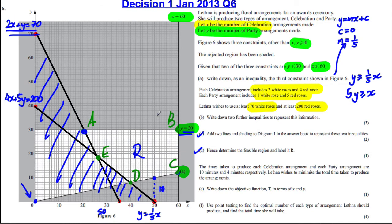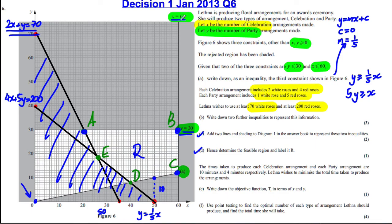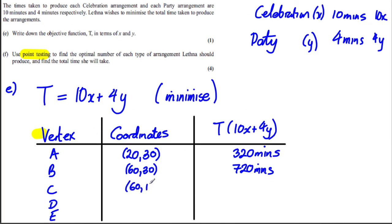Vertex B is clearly where y = 30 and x = 60, giving point (60, 30). Substituting: T = 10(60) + 4(30) = 720 minutes. Vertex C is where x = 60 intersects y = x/5. With x = 60, y = 60/5 = 12, so C = (60, 12). T = 10(60) + 4(12) = 648 minutes. So far the minimum is at vertex A with 320 minutes.